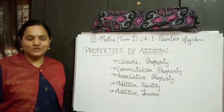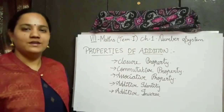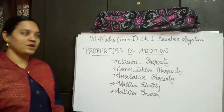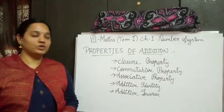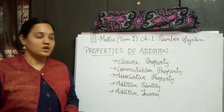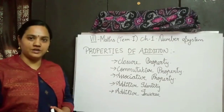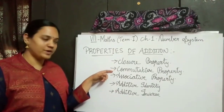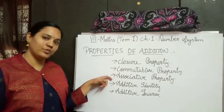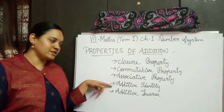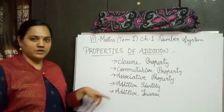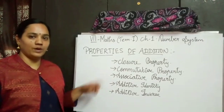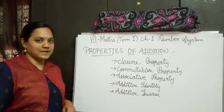Hi students, this is Sarmadipa. This is my third video for chapter number 1, number system. So today I am going to explain you the properties of addition. We have 5 properties for addition: closure property, commutative property, associative property, additive identity and additive inverse. I am going to explain you these properties one by one with a suitable example.